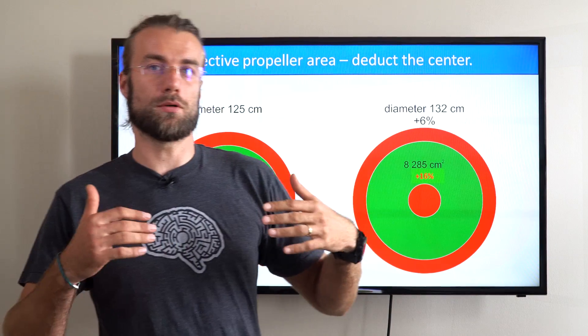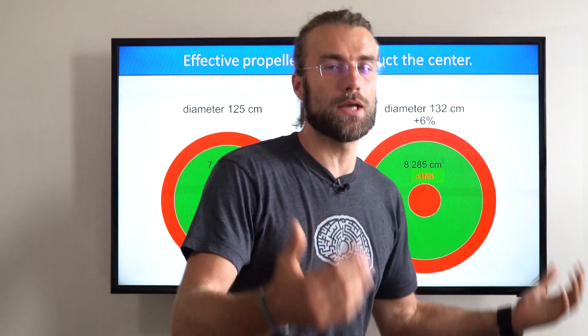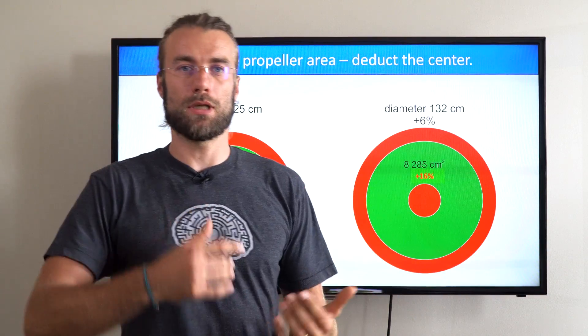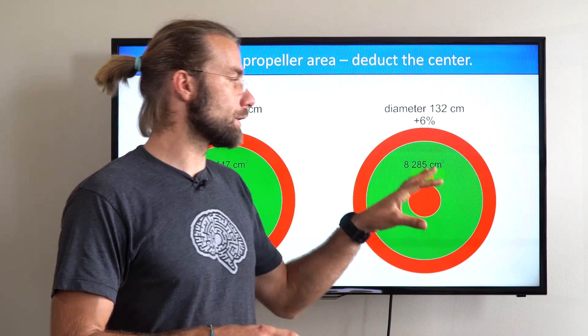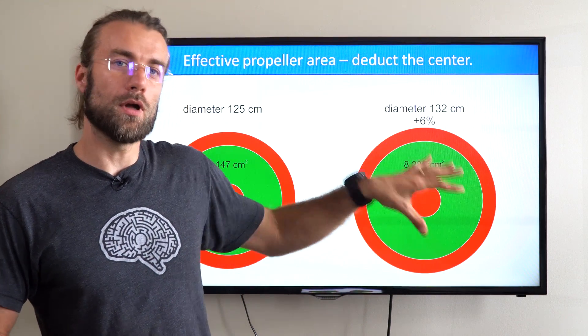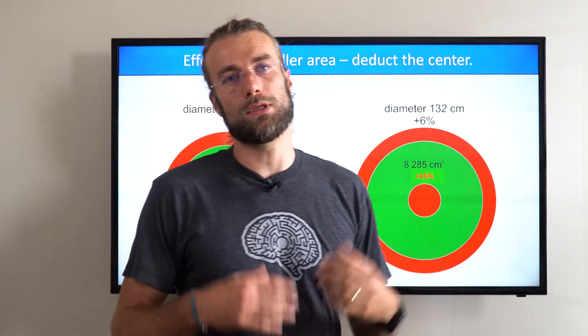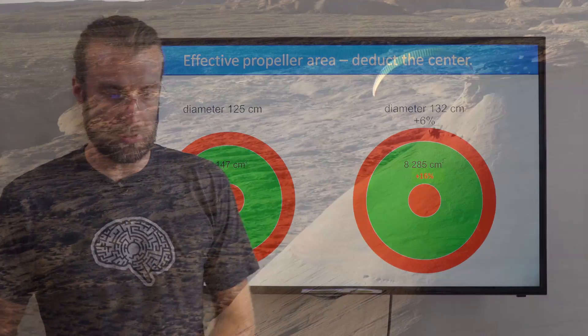Now, suddenly, the difference of the effective green area between a 132 and 125 prop gets to 16%, although the diameter difference is only 6%. This doesn't technically mean that a larger prop is 16% more efficient, but it's getting sort of close to it. This means that the larger prop grabs 16% more air, more air volume in every rotation, so it causes a larger volume to move, and it's sufficient to make it move at a lower speed.